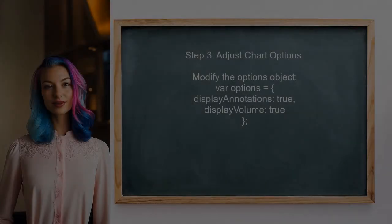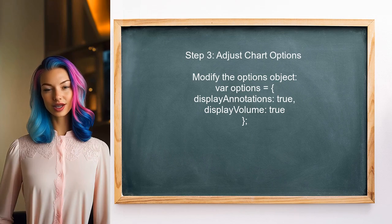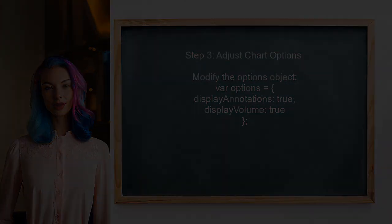After updating the data, you need to adjust the chart options to ensure the volume section is displayed correctly. This can be done by modifying the options object.